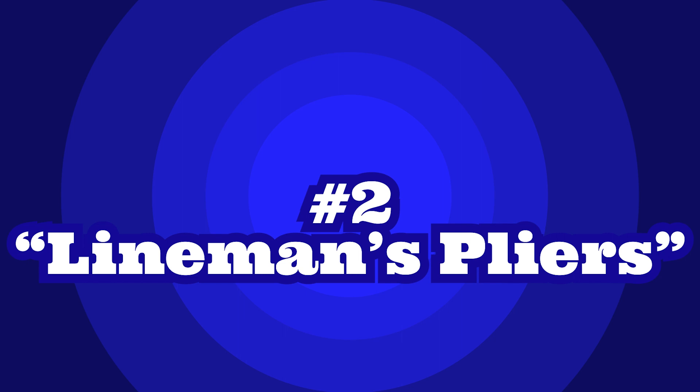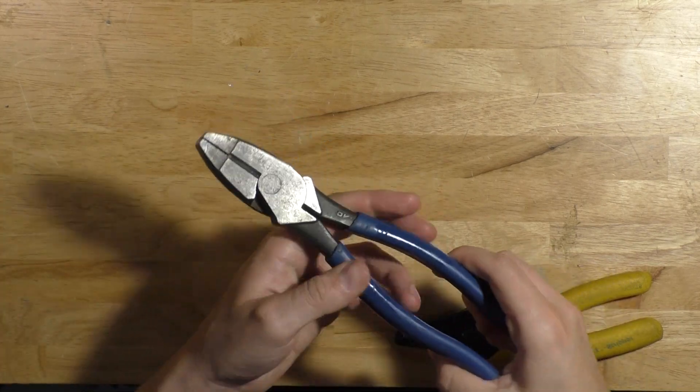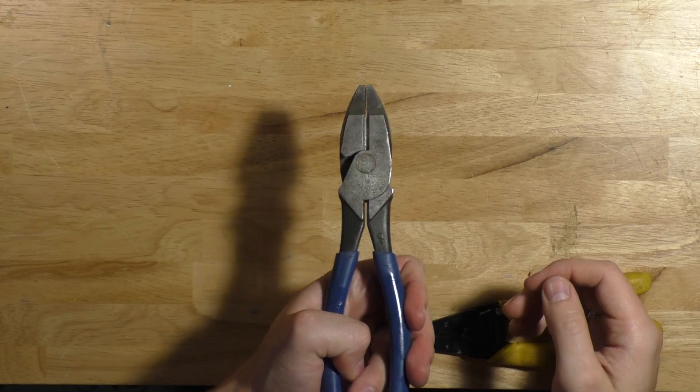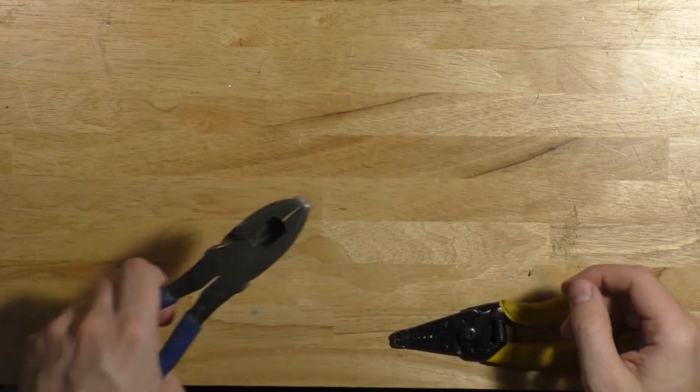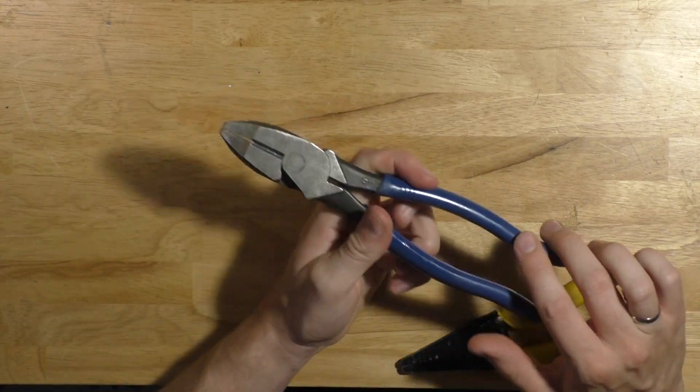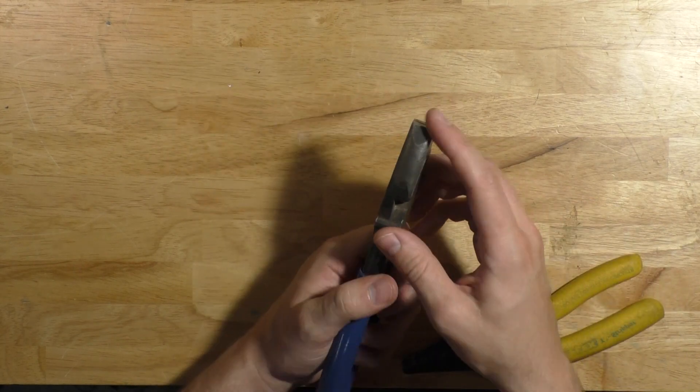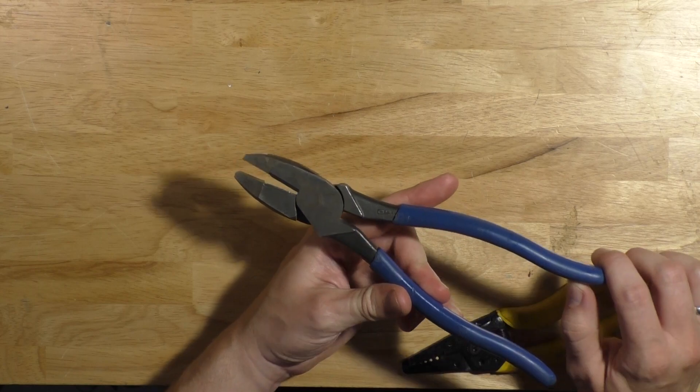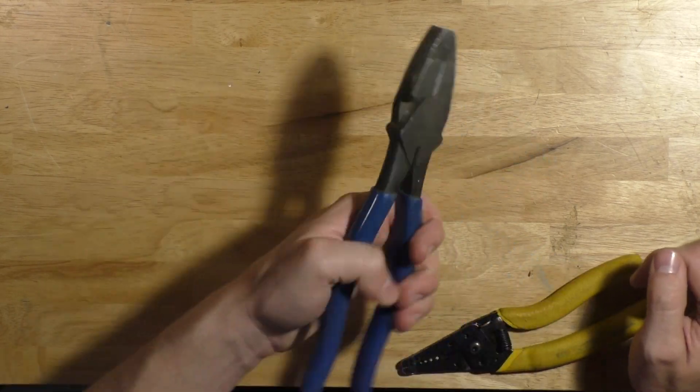Number two on the list is the lineman's pliers. This is the go-to pliers when it comes to splicing wires or twisting wires together. The lineman's pliers is also used to cut cable and wire with the blade as well as grabbing fish tape when pulling wire. The pliers has a nose at the end of it that can be used for a general purpose plier besides your regular wire twisting duties.